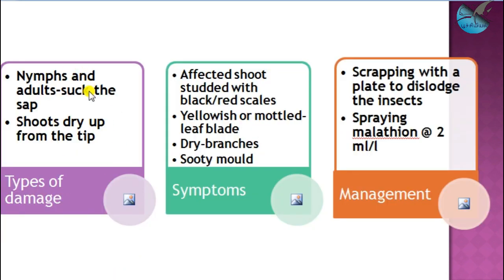Another type is the red scale, Aonidiella or Antonina species. The damage symptom is similar: nymphs and adults suck the sap, and based on the color of the scale — black or red — we can identify them on the yellowish or moribund leaf. Due to their sucking habit on the branch, it ultimately dries and sooty mold grows. For management, scraping with a blade to dislodge insects or spraying with water can be done in initial stages, followed by chemicals like malathion at 2 ml per liter.